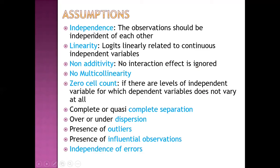Assumptions of logistic regression — these are very important. First is independence: observations should be independent of each other. Then linearity: logits should be linearly related to continuous independent variables. Then non-additivity: no interaction effect should be ignored; we should include all interaction effects in our model. There should be no multicollinearity, no zero cell count — that is, no levels of an independent variable for which the dependent variable does not vary at all. There should be no complete or quasi-complete separation, no over- or under-dispersion, no outliers, no influential observations, and there should be independence of errors or residuals.